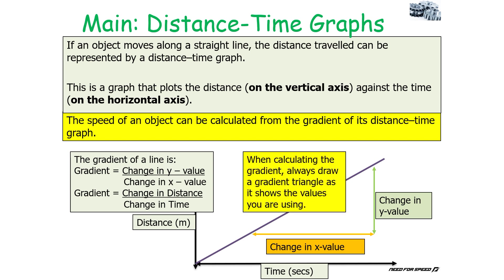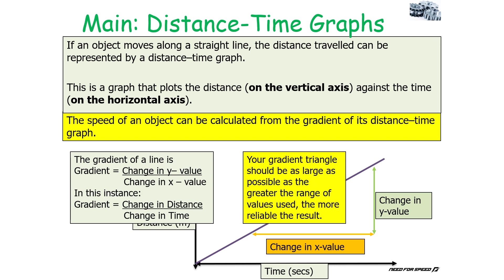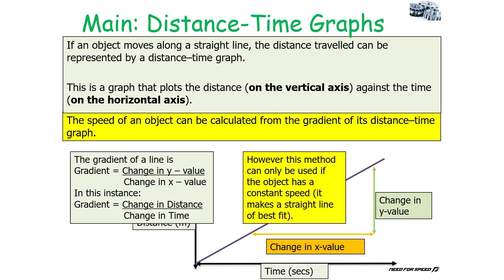When calculating the gradient, always draw a gradient triangle, as it shows the values you're using. Your gradient triangle should be as large as possible, because the greater the range of values used, the more reliable the result. However, this method can only be used if an object has a constant speed — it makes a straight line of best fit.